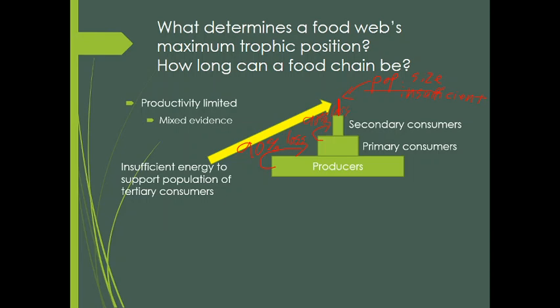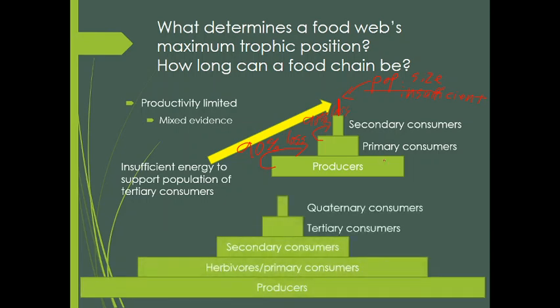If you had started off with a lot more biomass, even with a 90% loss you can expect to have primary consumers, secondary consumers, potentially tertiary consumers, and quaternary consumers. So this productivity or energy limit is the hypothesis that says the more energy you have flowing through a system, the more trophic levels you can have — the longer the food chain can be.